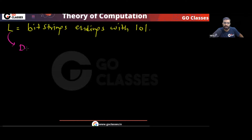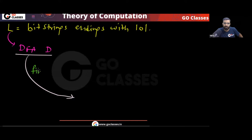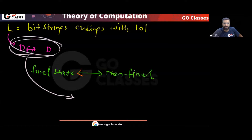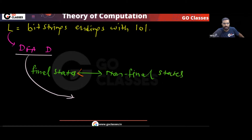We create DFA D for the language of bit strings ending with 101. Then in this DFA, we make all the final states non-final and all the non-final states final. Basically, we are complementing the states. So we create a DFA for bit strings ending with 101, then do this complementation of states.